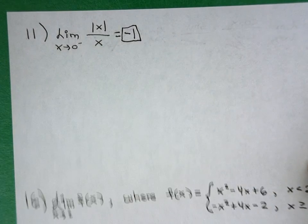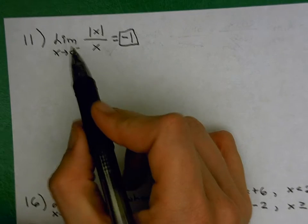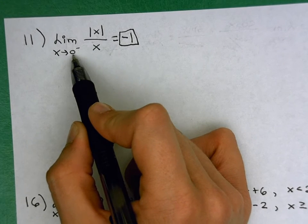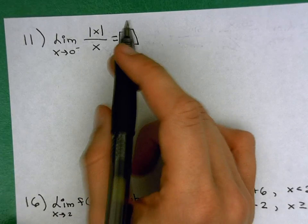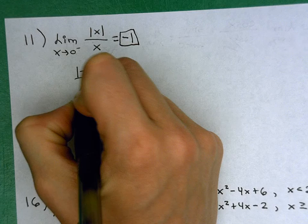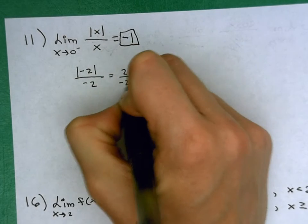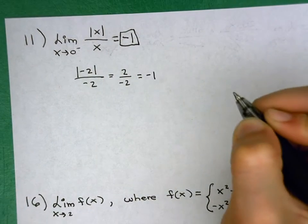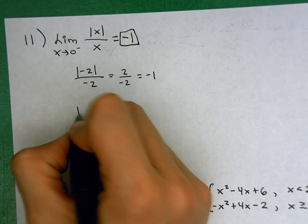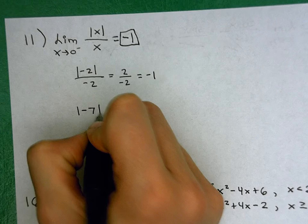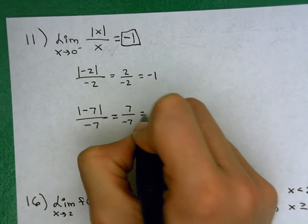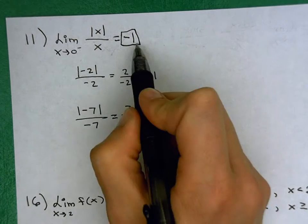It doesn't matter which value you pick, you can pick several if you want to, but one would suffice. And so if I pick a value to the left of 0, that could be like negative 2. When I plug in negative 2, I get negative 1. And if you still wanted to double check, you could pick another one. Well, negative 7 is even further left of 0 than negative 2. And when we plug in negative 7, we again get negative 1, which was our overall limit.